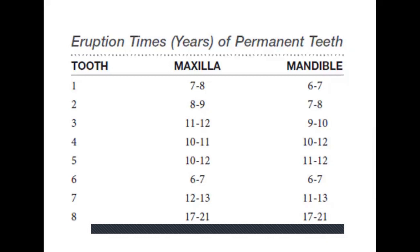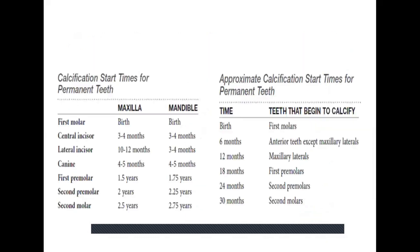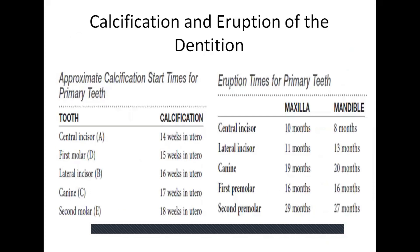The eruption sequence for primary teeth follows the order A, B, C, D, E. Tooth numbers B, C, and D tend to erupt earlier in the mandible. A 6-month variation in the time of eruption is considered generally normal.